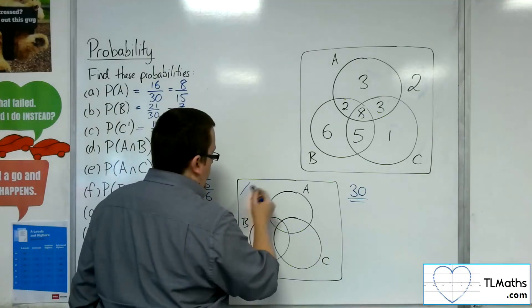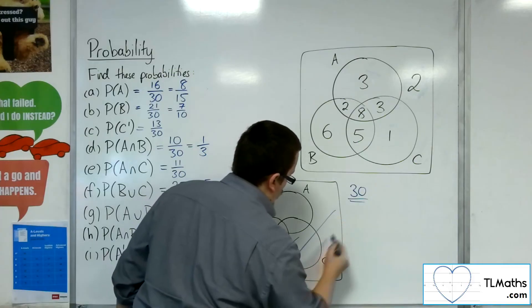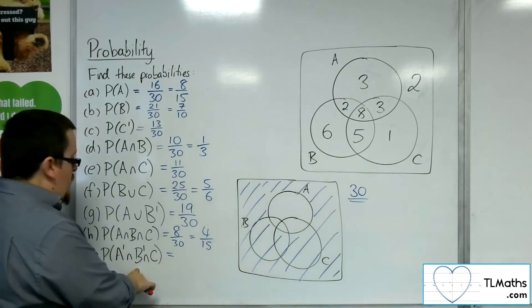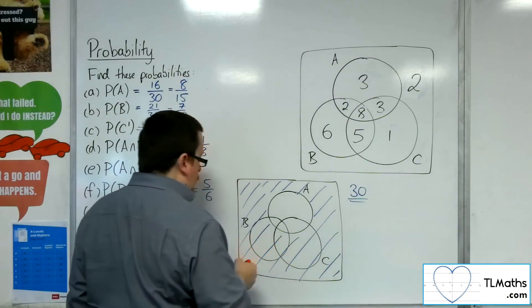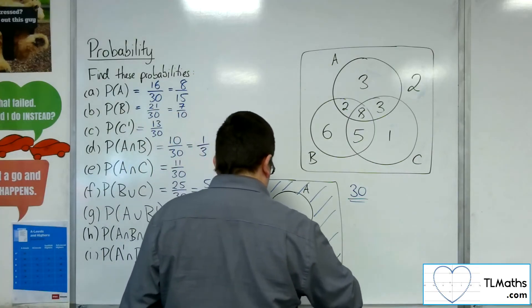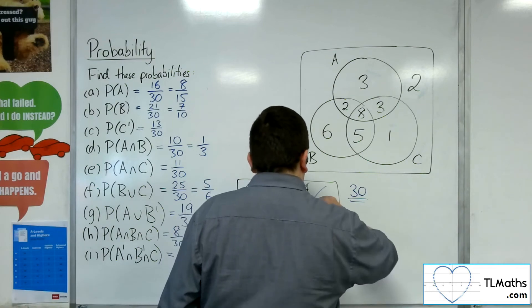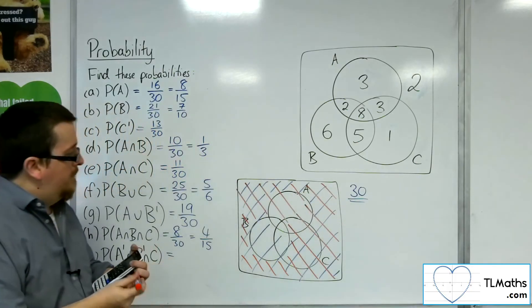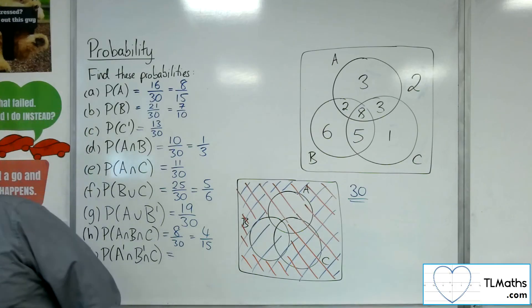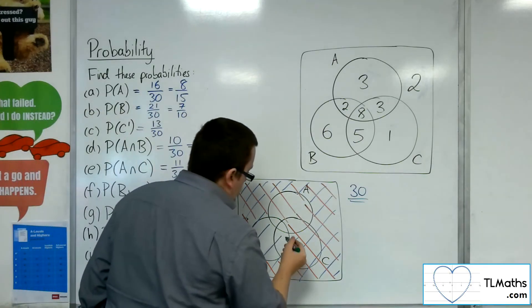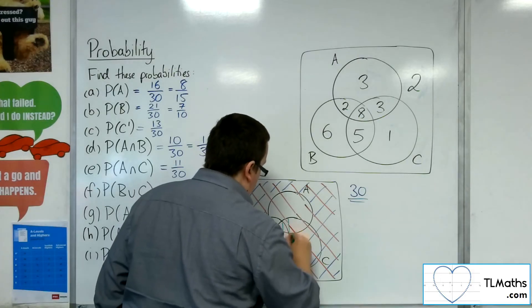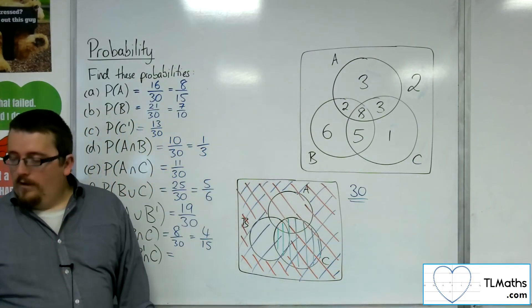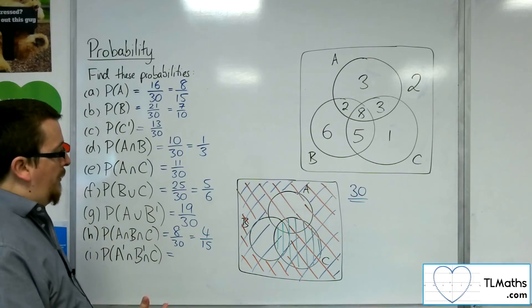We want not A — anything outside of A. Then we want not B — anything outside of B. And C, drawn with vertical lines.